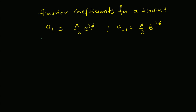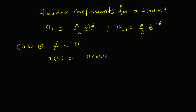Therefore, the Fourier coefficients for the sinusoid x(t) = A·cos(ω₀t + φ) are: a₁ = (A/2)·e^(jφ) and a₋₁ = (A/2)·e^(-jφ). Now let us look at two special cases. Case one: when the phase φ = 0, x(t) simply becomes A·cos(ω₀t).